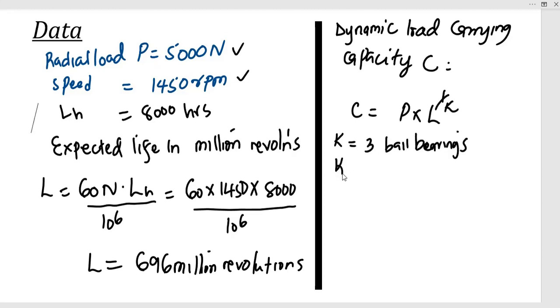So therefore C = 5000, which is P, our radial load, times L which is 696 to the power of 1/3. And C = 44.3 kilonewtons.